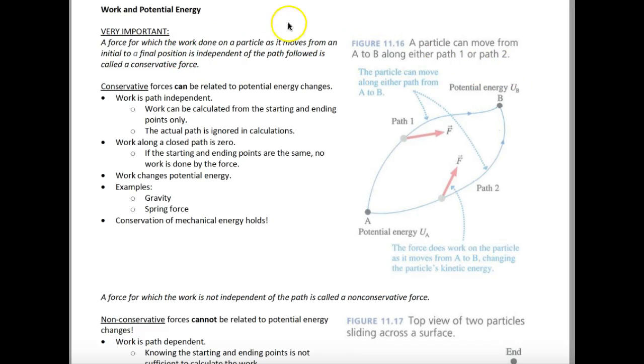This is super important, and I know that you're going to just sit and listen for a while, but I think that's okay too. It's very important that you understand a force for which work done on a particle, as it moves from an initial to a final position, is independent of the path followed is a conservative force. So there's two types of forces we're going to talk about, conservative and non-conservative forces. Conservative forces is where the path is independent. It doesn't matter how I get there.